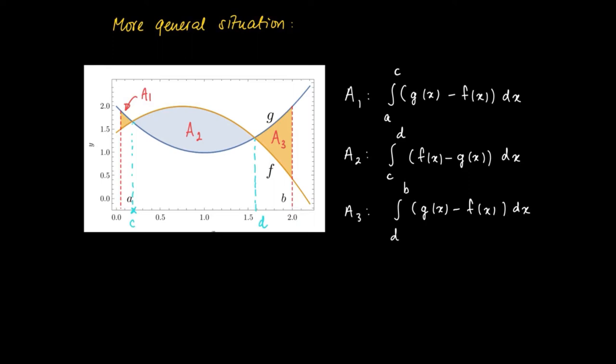We want to determine the total of the three areas. So A1 plus A2 plus A3 equals the integral from a to c of g(x) minus f(x), but this can also be written as f(x) minus g(x),